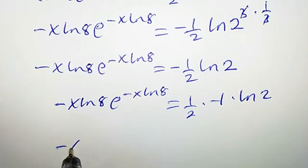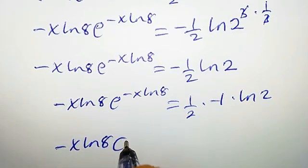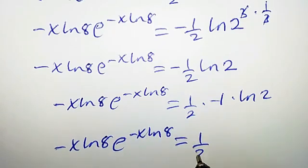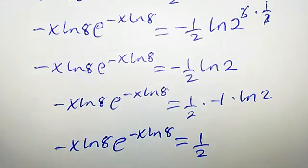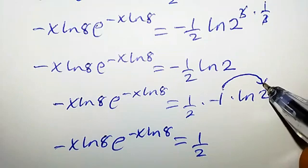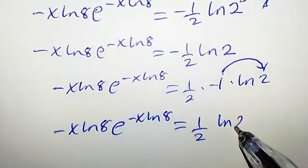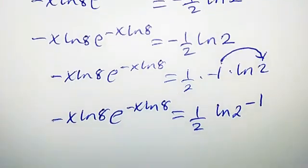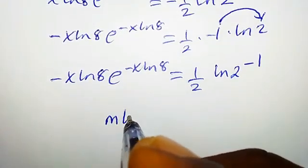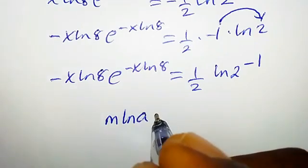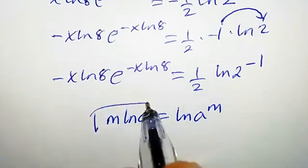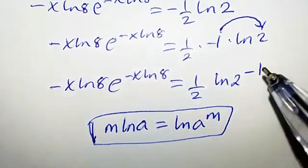Minus x ln 8 times e to the power of negative x ln 8 equal to half. Also, by one of the rules of logarithm, this guy can come to the power — so we are going to have ln 2 to the power of negative 1. It is from this property: m times ln a is the same thing as writing ln a to the power of m. Take note of this property. That's how we transform this to that form.